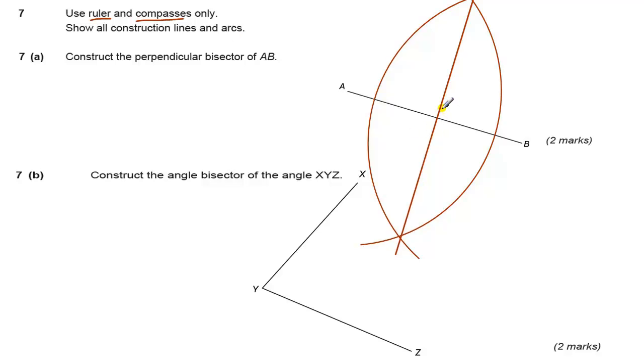If I was to measure that angle there, that would be a right angle. Also, every point on this line, on the perpendicular bisector, is the same distance away from A as it is from B.